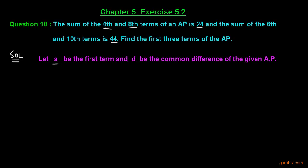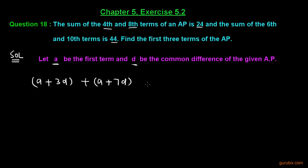Let A be the first term and D be the common difference of the given AP. We know that the 4th term can be written as A plus 3D, and the 8th term as A plus 7D. If we add these two terms we get 24, as given in the question.